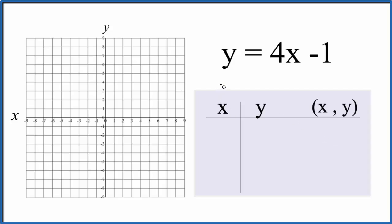So let's put some values in for x, get a value for y, then we'll graph those points on our graph paper here. Why don't we start with 0? 4 times 0, that's 0, 0 minus 1, minus 1.